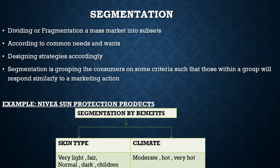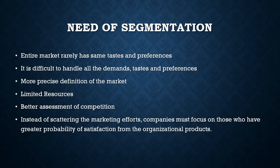Let us take an example. If we talk about Nivea, their sun protection products are focused upon the women segment of the market. Market segmentation can also be done on the basis of benefits. Nivea has divided the market on the basis of skin type — very light, fair skin, normal skin, dark skin, or children — and also on the basis of climate, like applying the product in winter or summer season.